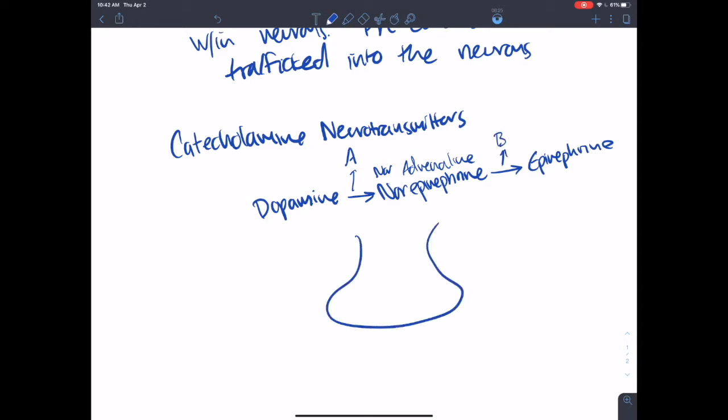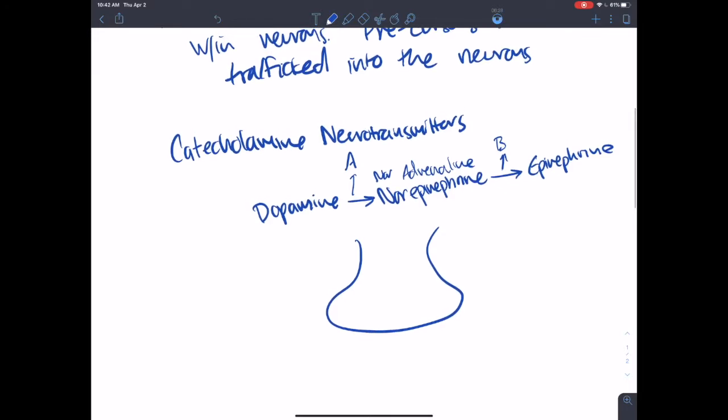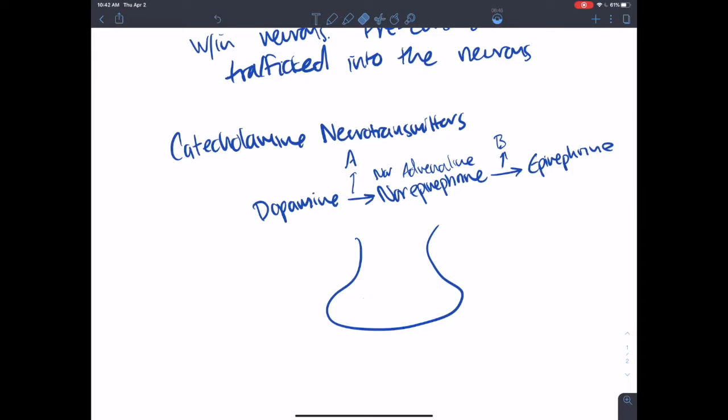So if I'm a presynaptic terminal, and I contain neither of these enzymes, neither enzyme A or enzyme B, I'm going to be a dopaminergic neuron. Because I'm going to be producing dopamine, I'm going to be trafficking dopamine into synaptic vesicles, and then leading to their release. If I then express enzyme A within this synaptic terminal, I'm going to be a norepinephrineergic neuron, or a noradrenergic neuron. So if I have enzyme A, I'm going to be a noradrenergic neuron, and if I have enzyme A and enzyme B, I'm going to be just an adrenergic neuron.